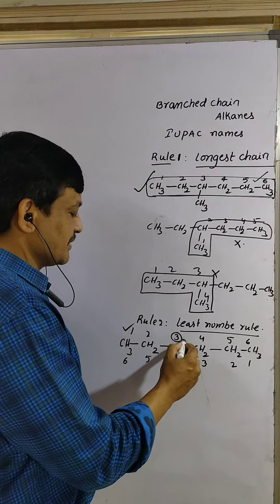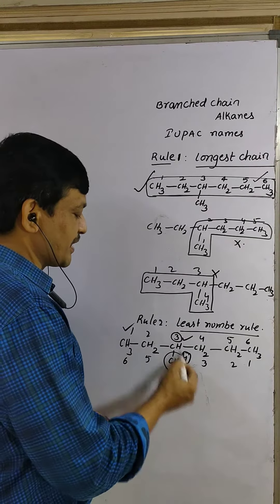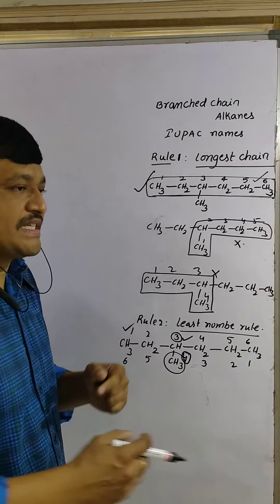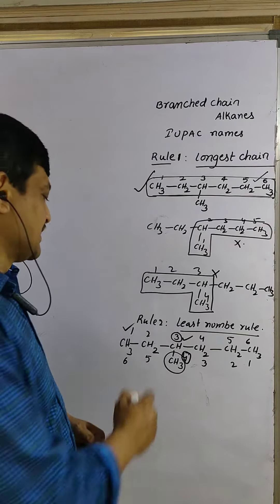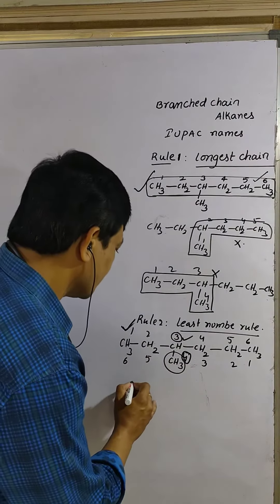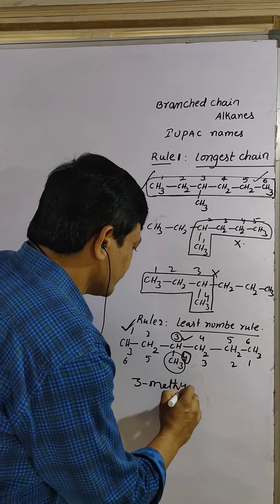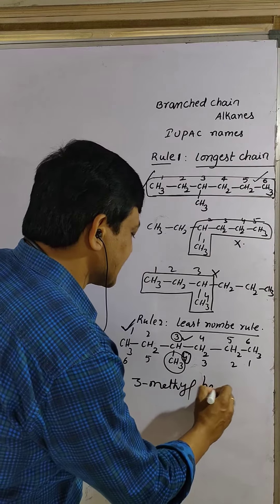Left to right, the substituent gets third number. Right to left, the substituent gets fourth number. Which is the least number? This is the least number. So left to right is correct. What is the name? 3-methyl hexane.